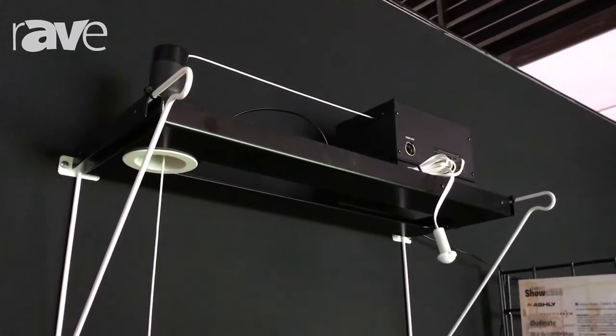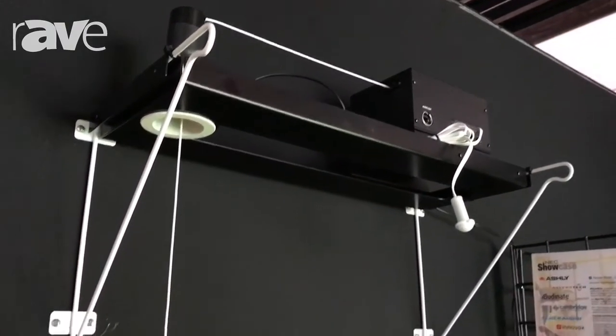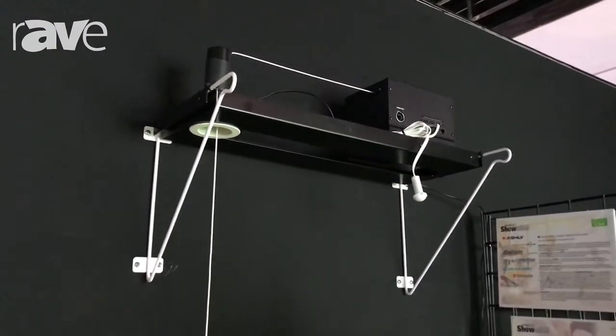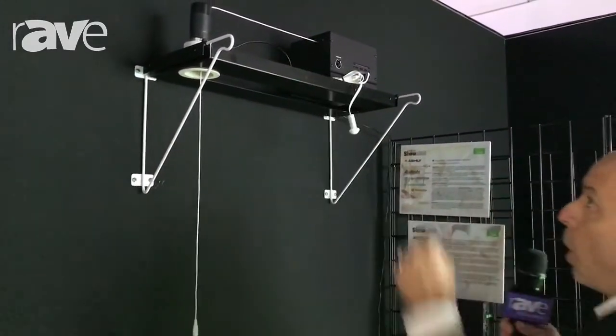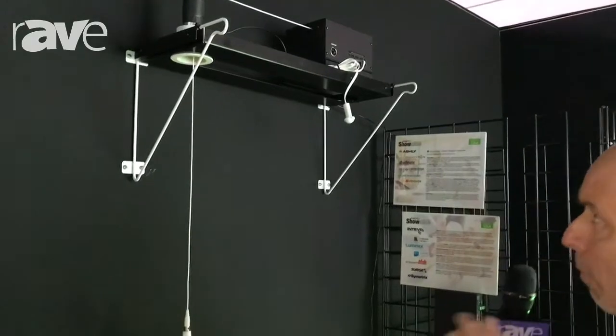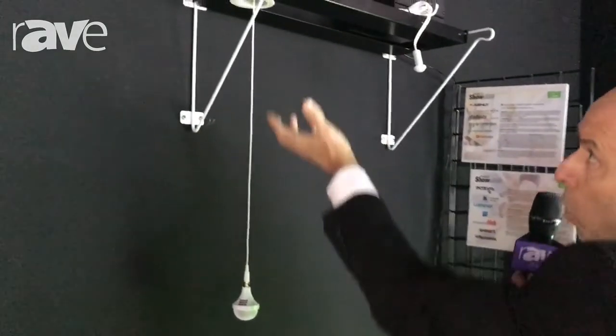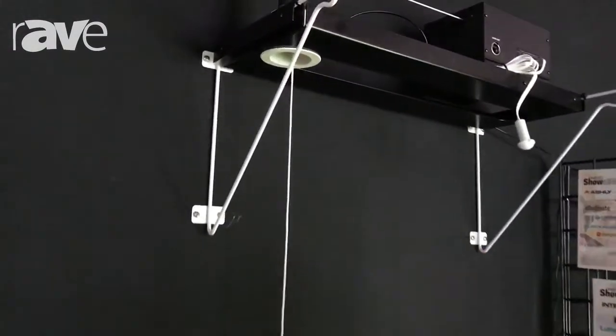Another thing that's interesting about this product is that it comes fully assembled, so it's quite easy for integrators to install. All they have to do is put the product on the ceiling tray and drill a hole in the ceiling tile for the bezel, and that's pretty much it.